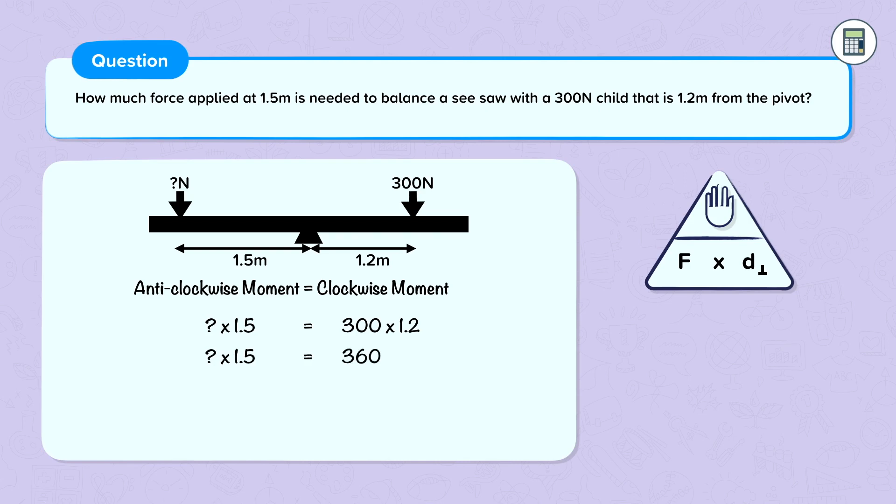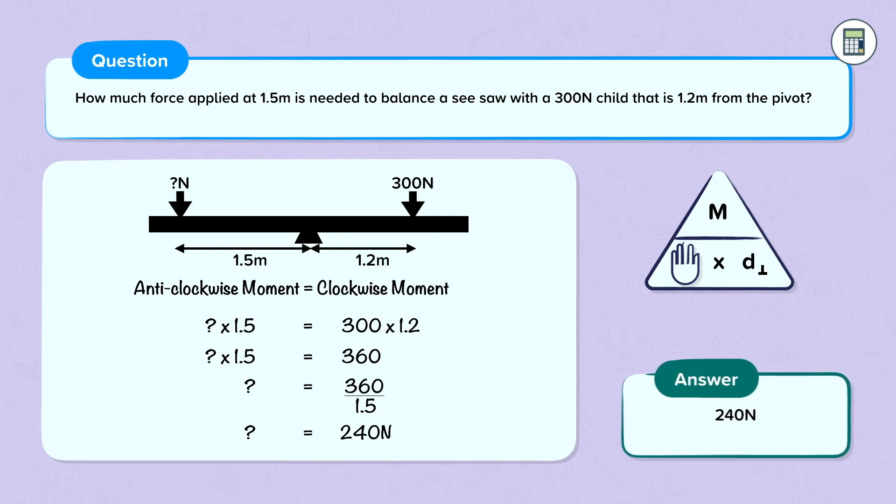So now let's divide that side by 1.5 to get our mystery force by itself. Because force is moment divided by distance, so 360 divided by 1.5 is 240 newtons. We need a force of 240 newtons applied 1.5 meters from the pivot to balance that seesaw.